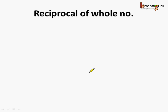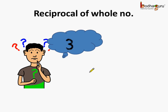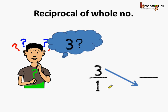Now you may think: what is the reciprocal of a whole number? Like, what is the reciprocal of 3? We know 3 means 3 by 1, so now it becomes easier to get the reciprocal of 3. So 3 goes here and becomes the denominator, and 1 goes up and becomes the numerator. So the reciprocal of a whole number is 1 by that whole number — the reciprocal of 3 becomes 1 by 3. Understood, children?